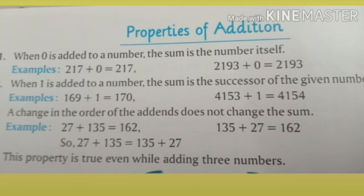And third point — a change in the order of the addends does not change the sum. Means किसी number को अगर हम plus कर रहे हैं, like 27 plus 135 equals to 162. And same, if मैंने addends को change कर दिया — means पहले 27 plus 135 किया था, but अगर 135 plus 27 किया, then the answer will be same. यहाँ सिर्फ order change किया है, sum change नहीं किया।